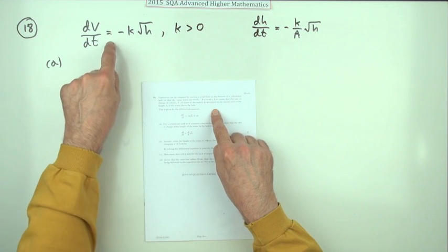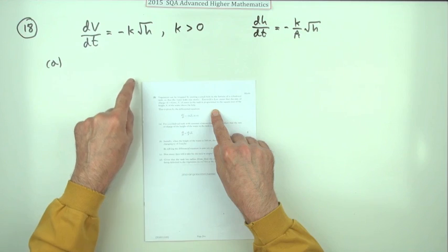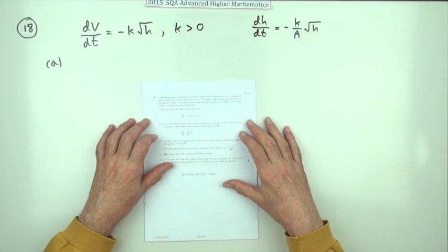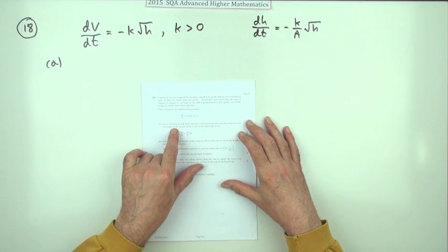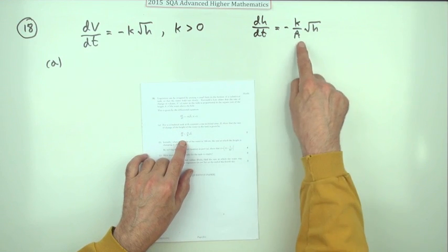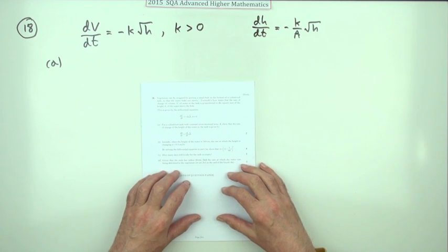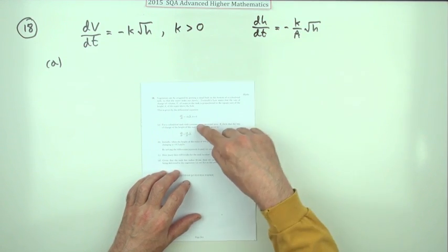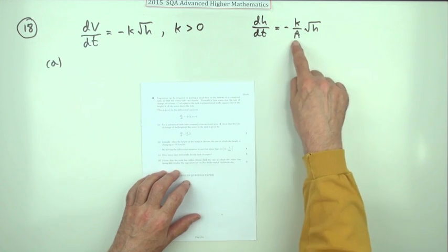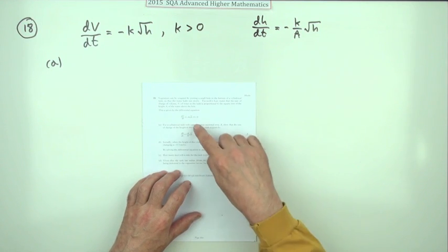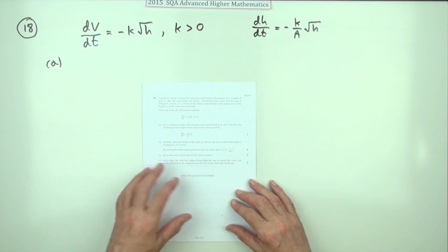Torricelli's law states that the rate of change of volume is proportional to the square root of the height and it's given by this differential equation. For a cylindrical tank of cross-sectional area A, show the rate of change is given by this for the first two marks. And of course it doesn't actually matter it's cylindrical as long as it's a prism because it's only mentioned in the cross-sectional area.